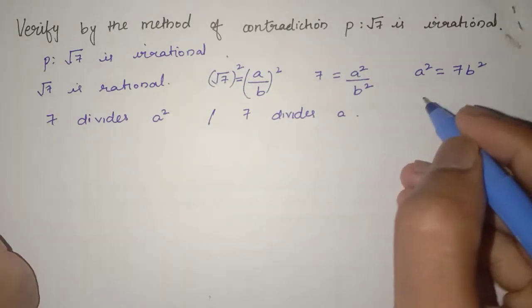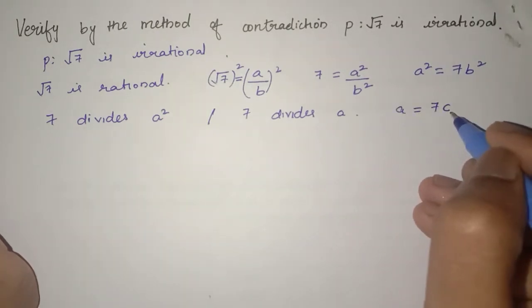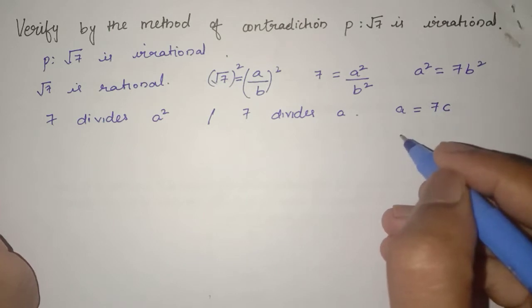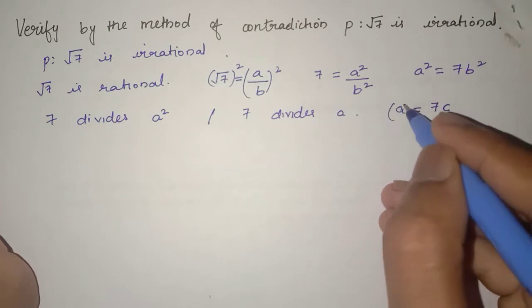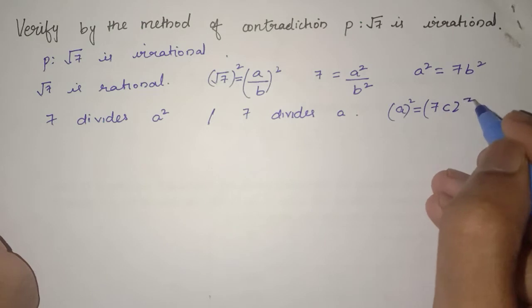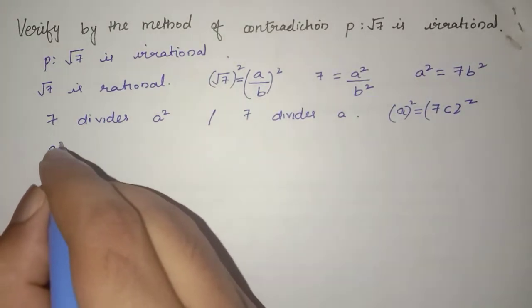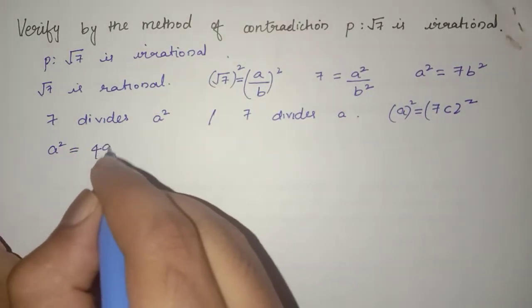So we can write A = 7C. If we square both sides, we get A² = 49C².